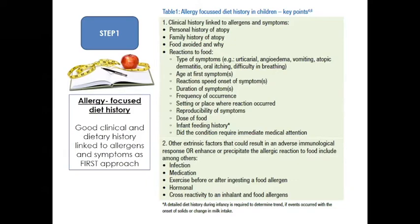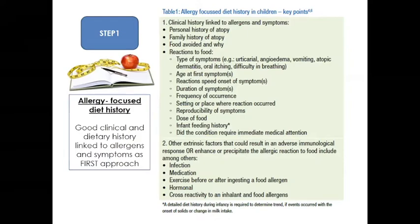The clinical history entails the patient's background, family history, whether they're avoiding a food and why, what reactions occur, and detailed information about those reactions. Key questions include: What are the symptoms? At what age did it first occur? Does it happen frequently? With repeated exposure, does it have the same outcome? Did they seek immediate medical attention? Also consider extrinsic factors like infections or medications that could have contributed.